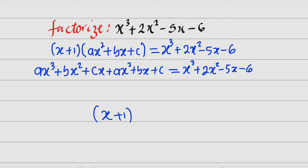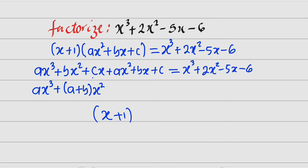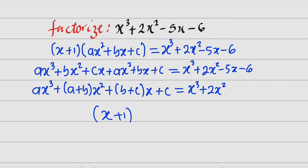Let us collect the like terms. We have ax to the third power. The x squared terms give (a plus b) x squared. Then cx and bx are combined, giving (b plus c) multiplied by x, then the constant c. And to the right we still have x to the third power plus 2x squared minus 5x minus 6.